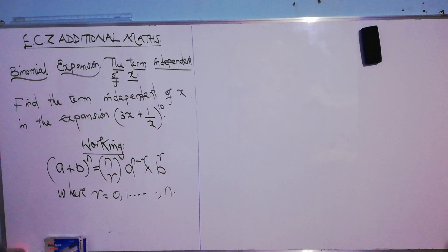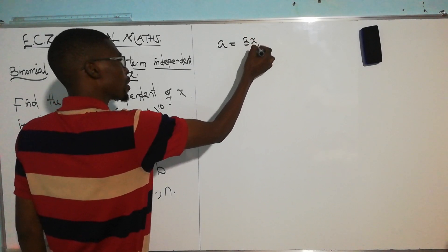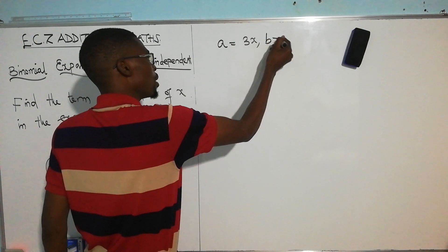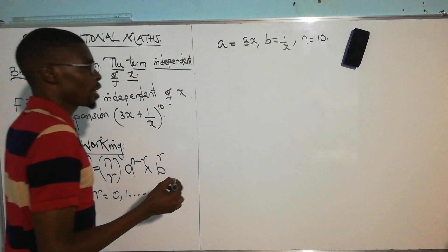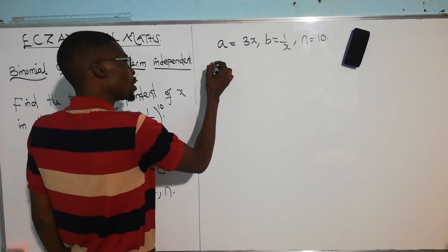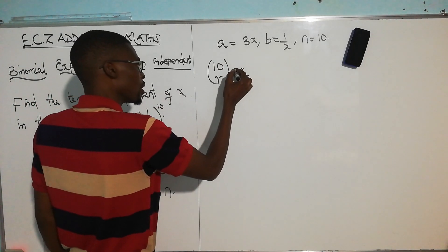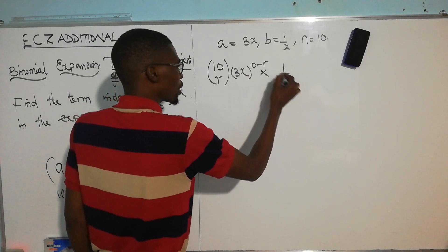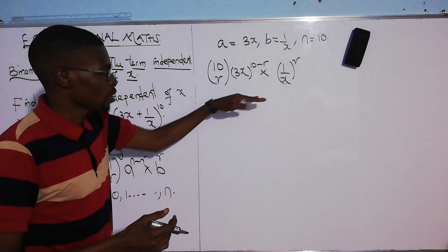Since our a equals 3x, b equals 1 over x, and n equals 10, each term of this binomial expression can be written as 10Cr times (3x) to the power (10 minus r), times (1 over x) to the power r.